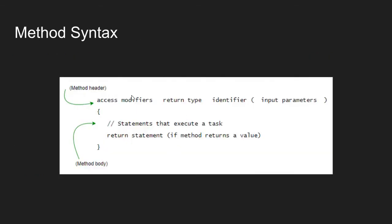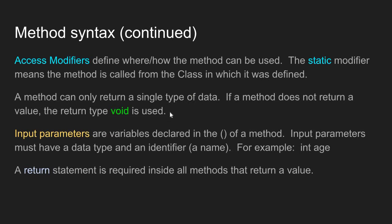After the access modifiers comes a return type. All methods must have a return type — the return type describes what type of data is returned from the method. A method can only return a single type of data, so maybe a method will return an integer, or maybe a string, but not both. If a method does not return a value, then the return type void is used, indicating that no value is returned.